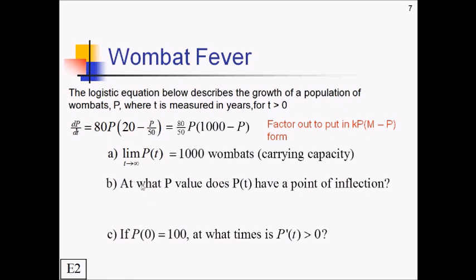For this next one, at what P value does P of T have a point of inflection? Well, again, if you know what the graph looks like, you know that point of inflection always happens at half the carrying capacity. So we just have to divide 1,000 by 2 to get 500 wombats. So far, these two questions have been exactly like the two questions that we had on the last example, the first two questions, except that they were asked a little bit differently. Instead of asking for the carrying capacity explicitly, we put it in kind of, we dressed it up in limit speak. Instead of asking where the rate was growing the fastest, we asked for a point of inflection. But it's really the same question in disguise.